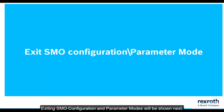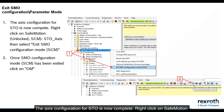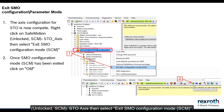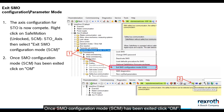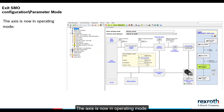Exiting SMO Configuration and Parameter Modes will be shown next. The axis configuration for STO is now complete. Right-click on Safe Motion Unlocked SCM, STO Axis, then select Exit SMO Configuration Mode SCM. Once SMO Configuration Mode SCM has been exited, click OM. The axis is now in Operating Mode.